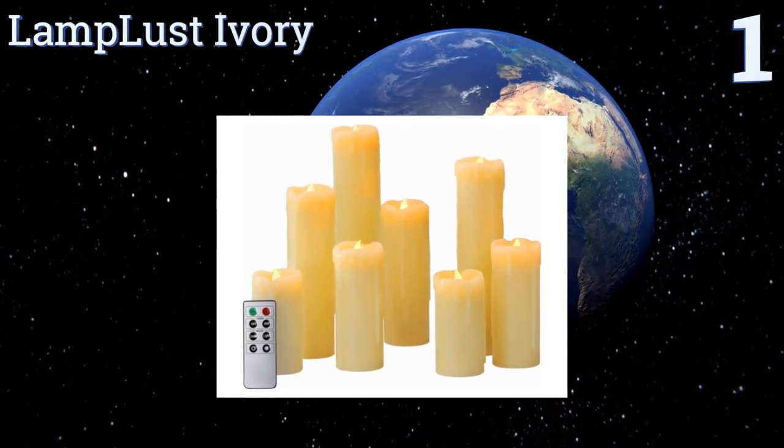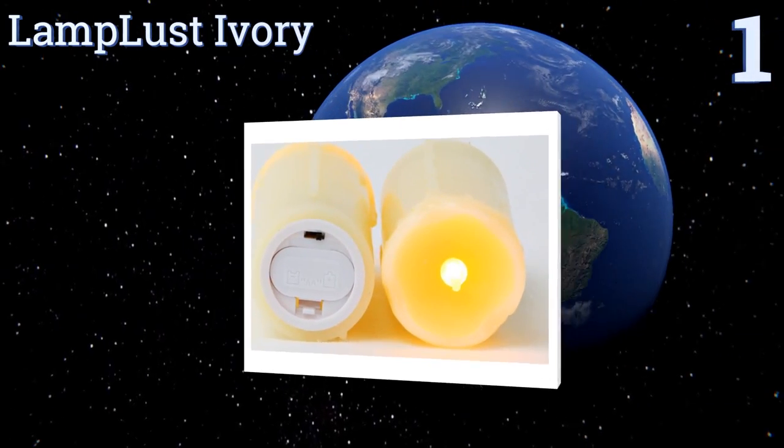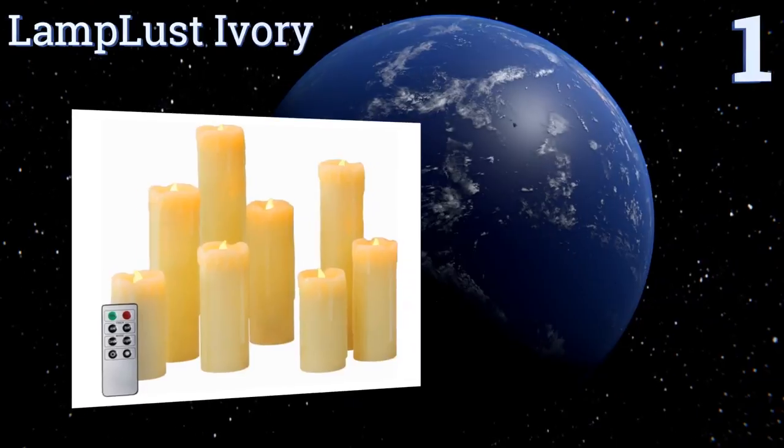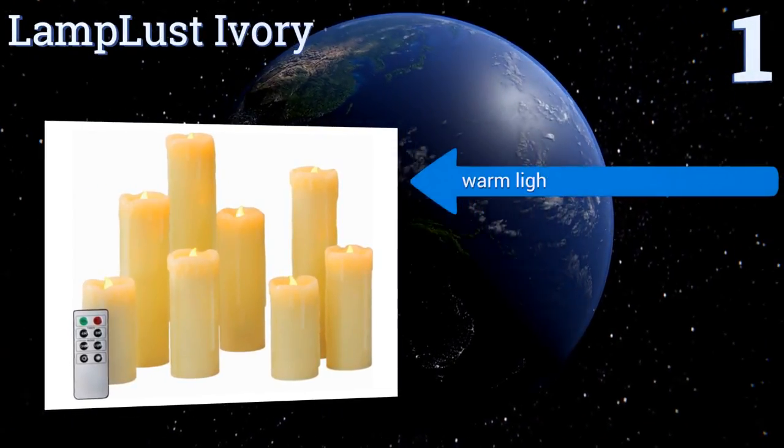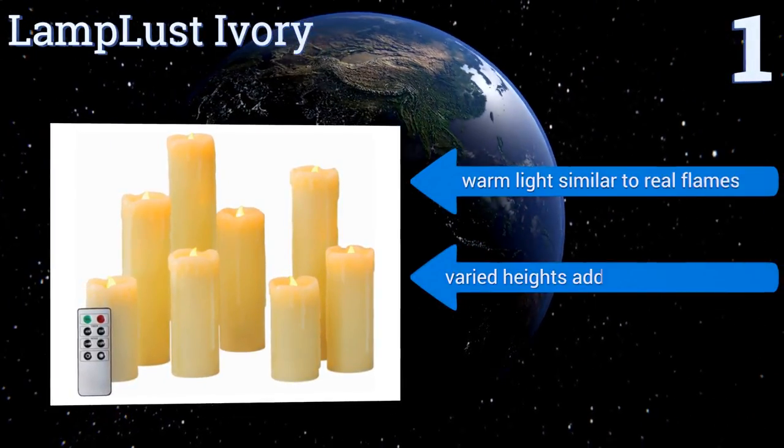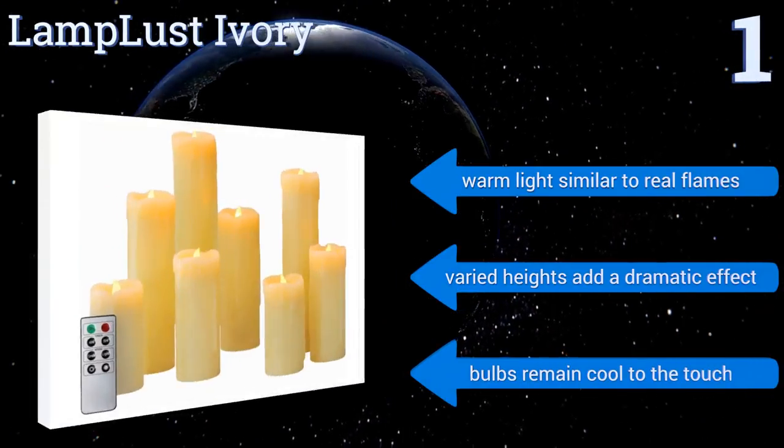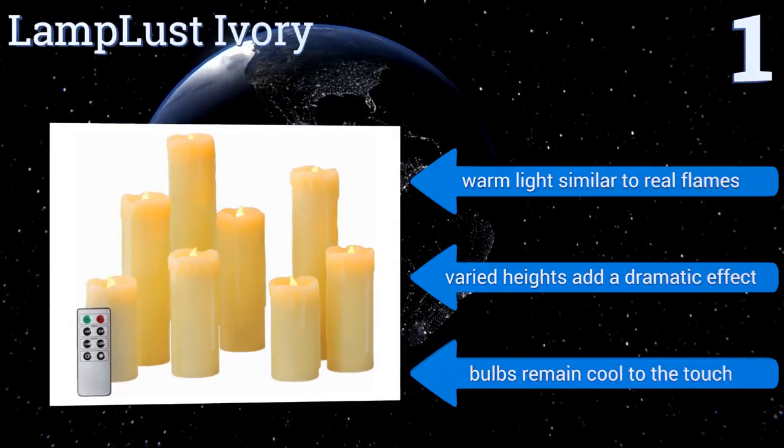And taking the top spot on our list, if you're hosting a Beauty and the Beast themed party and want as realistic looking candles as possible, the dripping wax on the LampLust Ivory is just what you need. They're also available with entirely smooth wax if you prefer that. They feature a warm light similar to real flames, varied heights that add a dramatic effect, and bulbs that remain cool to the touch.